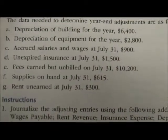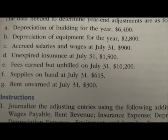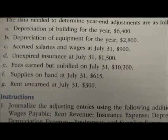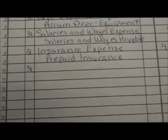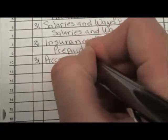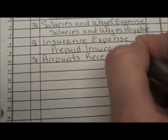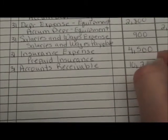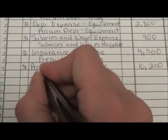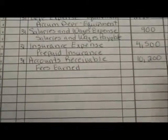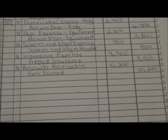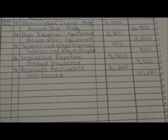Letter E says: Fees earned but unbilled on July 31st, $10,200. We have done services on account but have not billed them yet, so we need to record this. We're going to debit Accounts Receivable for $10,200 and credit Fees Earned for $10,200. We're debiting Accounts Receivable because we have completed the work but they have not paid us yet.